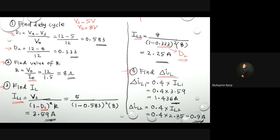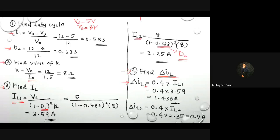Step 4 — find ΔIL. Since we have two IL values: ΔIL1 = 0.4 × 3.59 = 1.436 amperes. For ΔIL2, use the same approach — 40% of IL2.